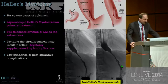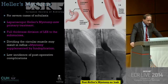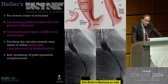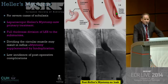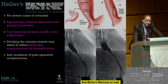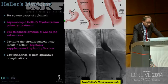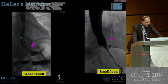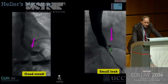Heller's myotomy is performed for severe cases of achalasia. Laparoscopic Heller's is now the most common procedure. The surgeon cuts the serosa, dissects the circular muscle, and by the end the mucosa is pouting through the incision. One problem is that disturbing the circular muscle may predispose the patient to gastroesophageal reflux, though this is a low incidence complication. On barium you can see a very nice result with good flow and no residual achalasia — and this is what you don't want to see: a small leak.